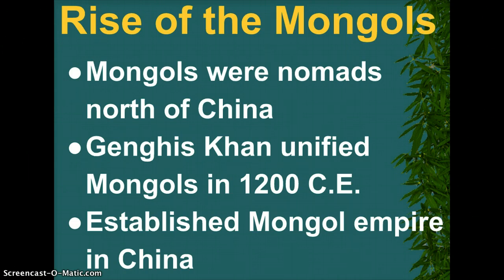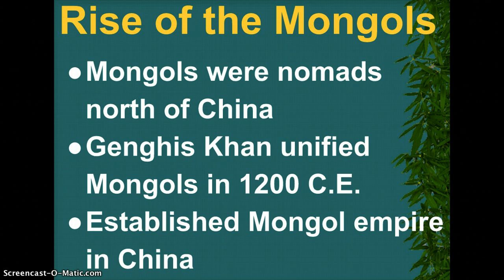We have just two parts left in our China unit. The first one is the invasion of the Mongols in 1200 CE, and the second is the Japanese. The Mongols are going to come from the north and invade China, led by their great ruler, Genghis Khan. He is going to establish the Mongol Empire, which is going to be the largest in world history.